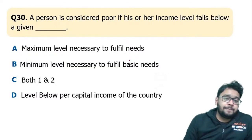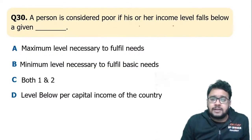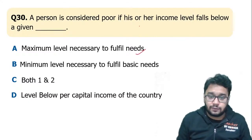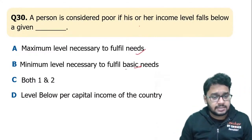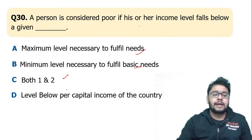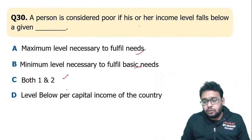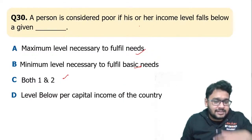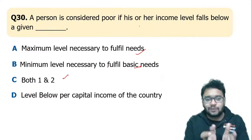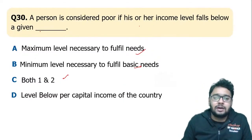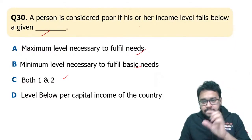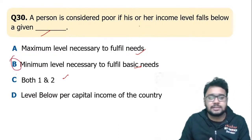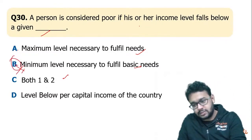A person is considered poor if his or her income level falls below: a given maximum level necessary to fulfill needs, the minimum level necessary to fulfill basic needs, both, or the level below per capita income. The correct answer is B — if the minimum level necessary to fulfill basic requirements is not fulfilled, a person is considered poor.